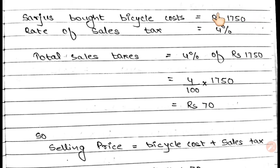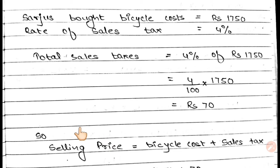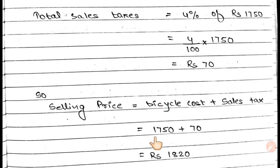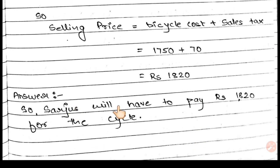Now there is the cost of the cycle and the amount of sales tax. You will add the price: the bicycle cost is Rs.1750 and the sales tax is Rs.70, so the total price is Rs.1820. Surjus will have to pay Rs.1820 for the bicycle.